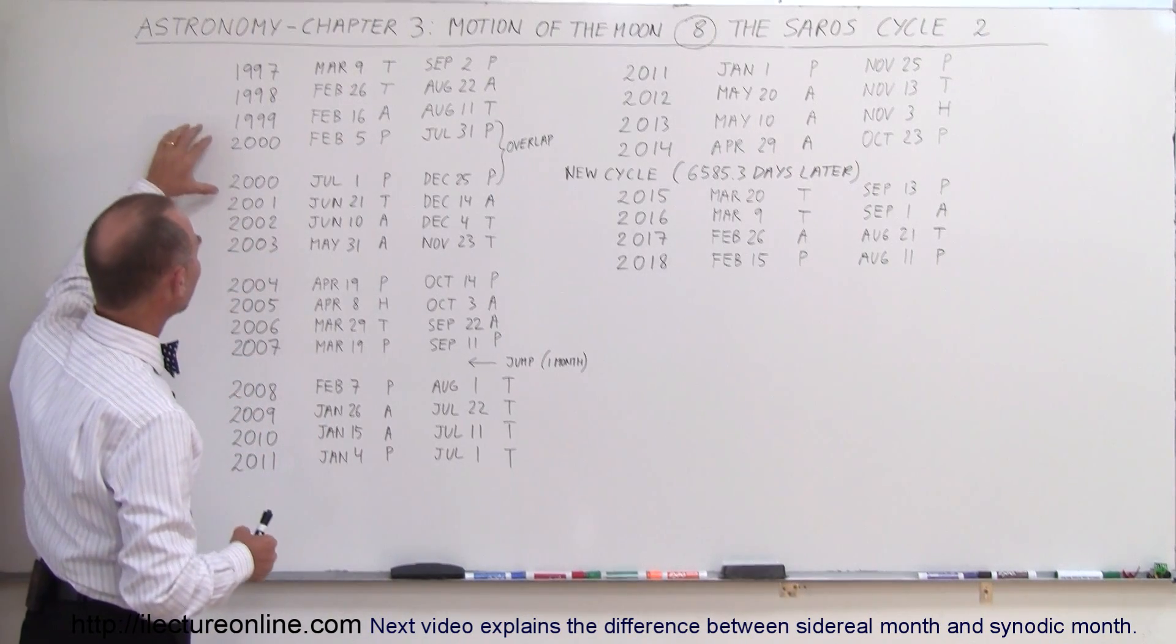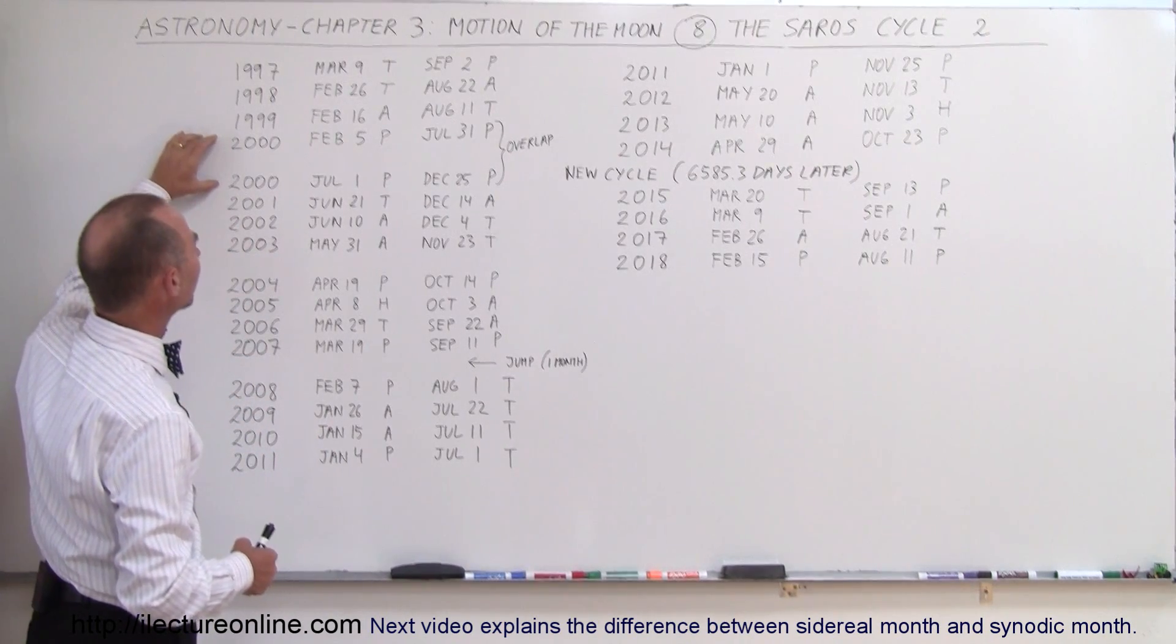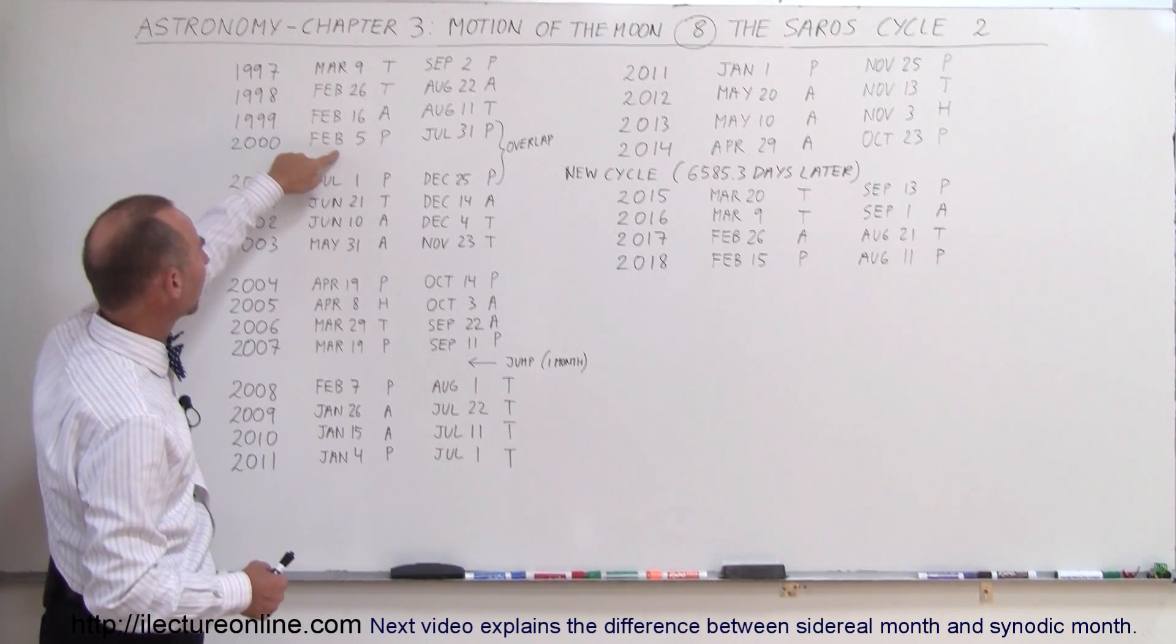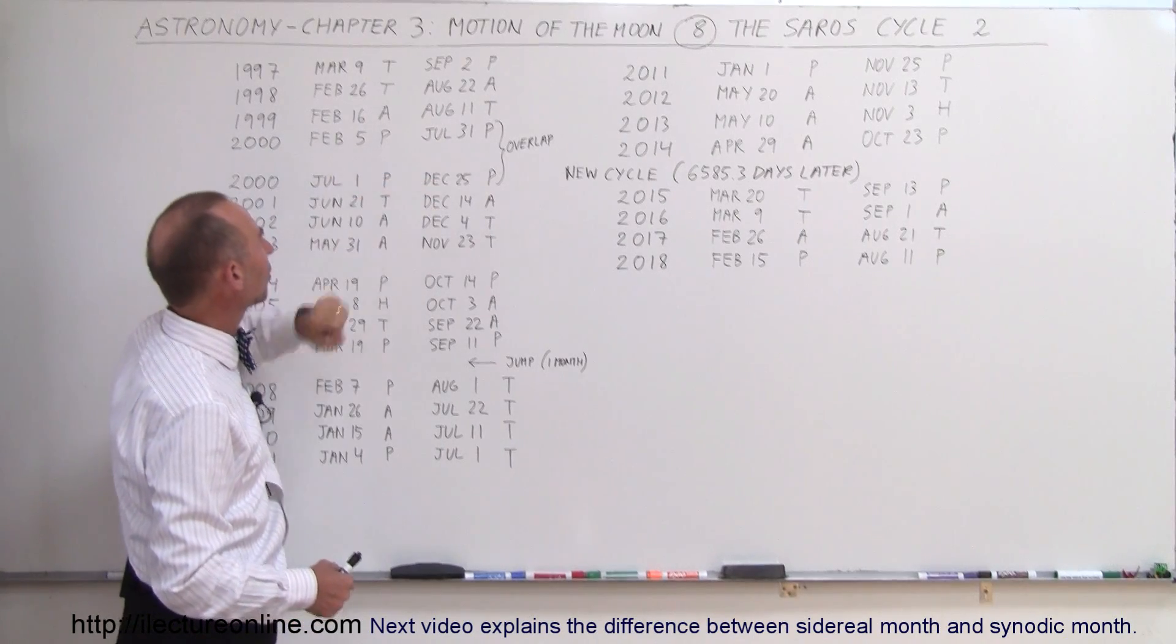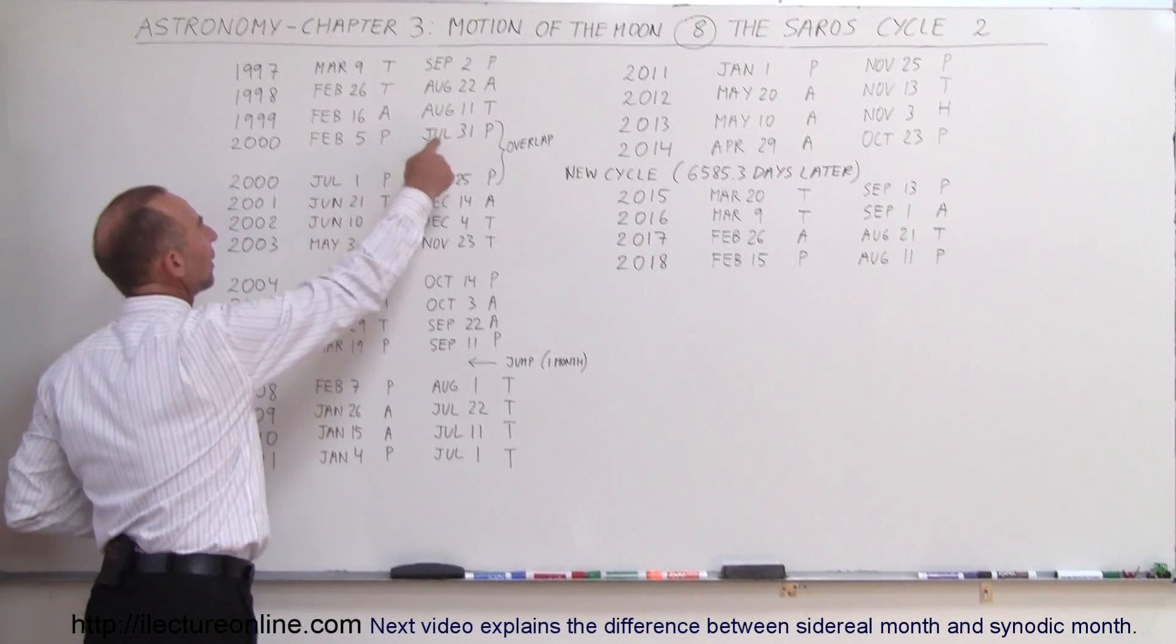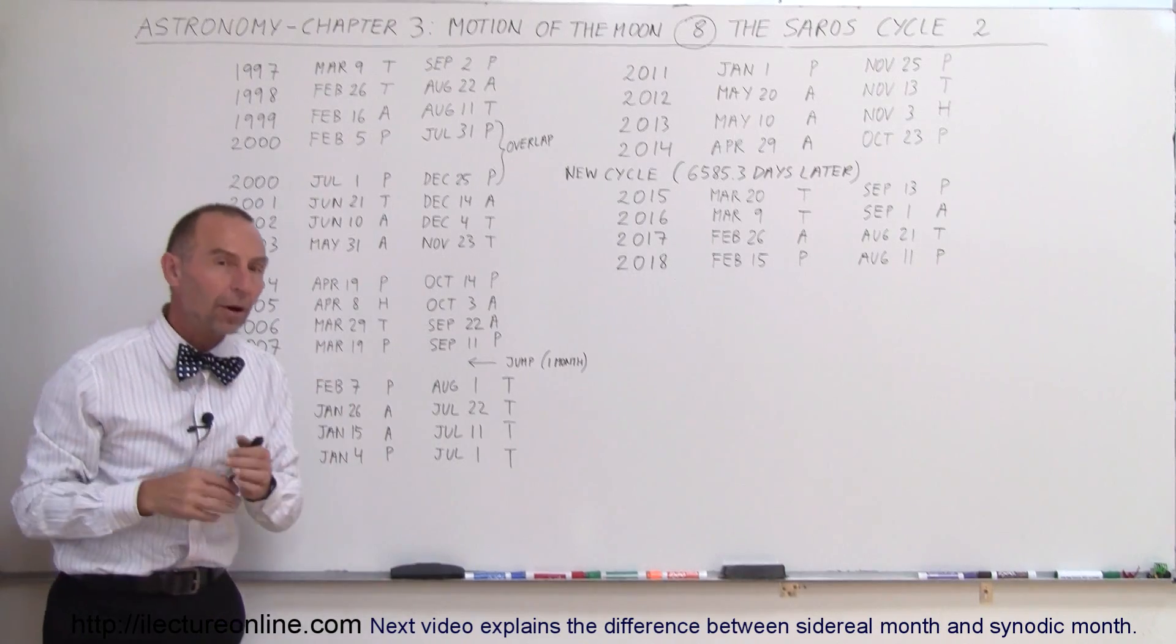Notice there were times that we had two sets of solar eclipses in the same year. Here we had in the year 2000, one on February 5th, one on July 1st, one on July 31st, one on December 25th. So you can see we had two solar eclipses one month apart.